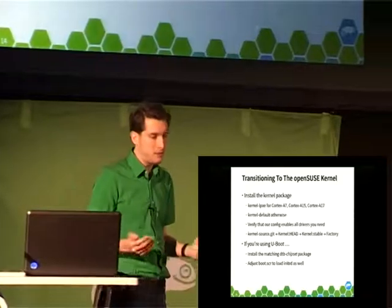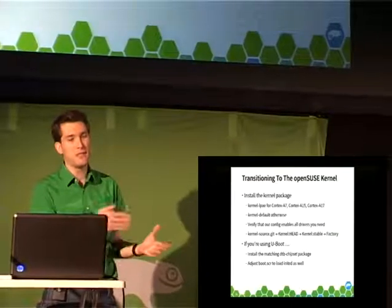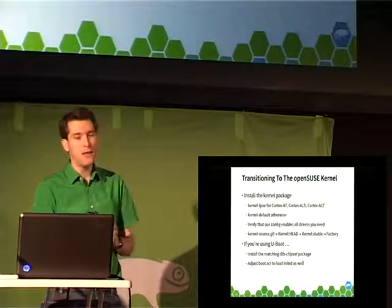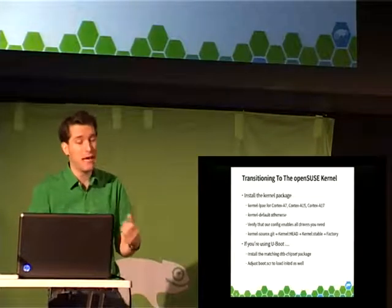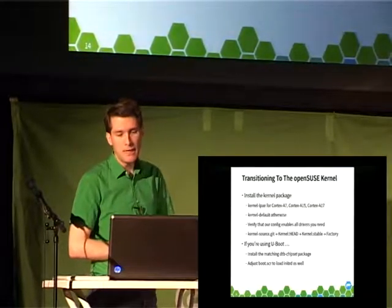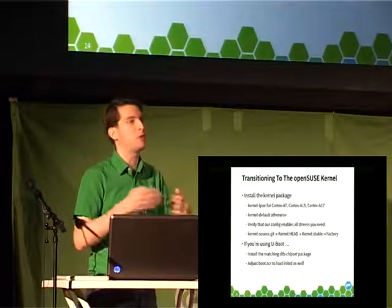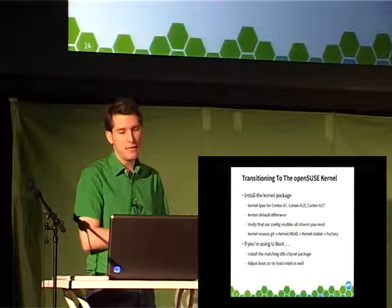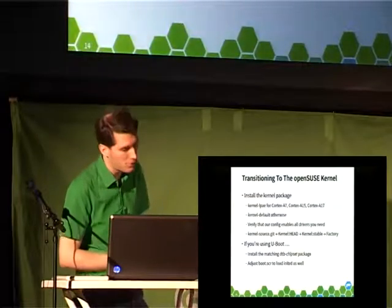An automatic script runs every morning that transfers configs from the git repository into the kernel-head package. It's then rebuilt, and a couple or even many hours later we will hopefully have a successfully built OpenSUSE kernel. At some point that gets transmitted to the kernel-stable repository, and from kernel-stable to factory. Once it's in factory, the ARM flavor will also get built in OpenSUSE Factory ARM.